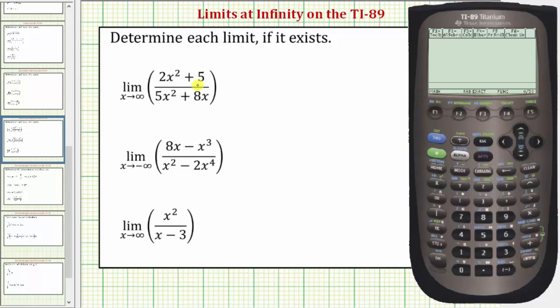So to determine this first limit, we'll press F3, and then either highlight number three and press enter, or just press three. Next we enter the function, and we do need the numerator and denominator in parentheses. We'll have open parenthesis 2x raised to the power of 2 plus 5,